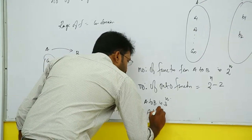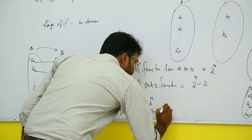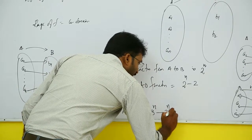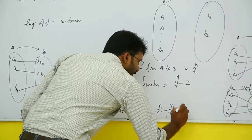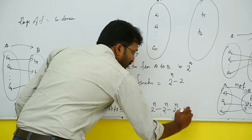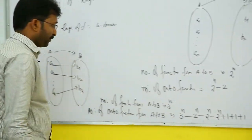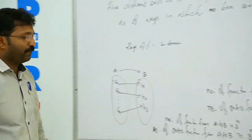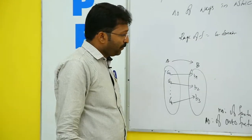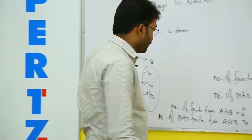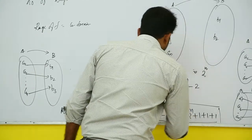The number of onto functions from A to B is 3^n minus 3 times 2^n plus 3. We use this result to solve this problem.